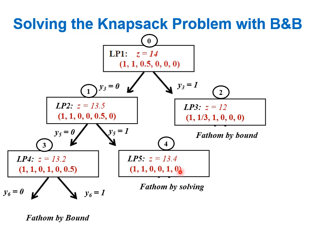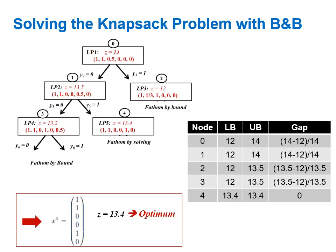We fathomed node four by solving and updated the incumbent solution, marking it with a star. Using the new bound of 13.4 we simultaneously fathomed the two open children of node three. Let's now summarize the lower bound, upper bound, and gap values at each node. At the root node zero: upper bound 14, lower bound 12 from the rounded integer solution, gap is (14-12)/14.